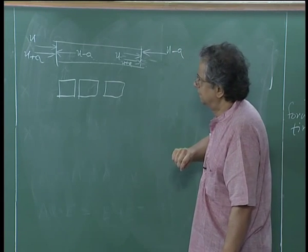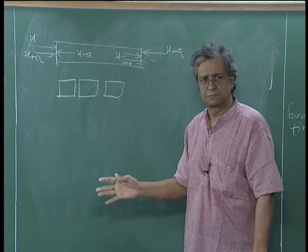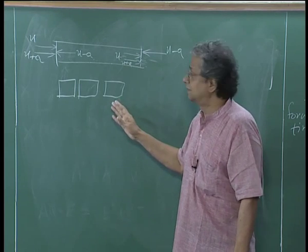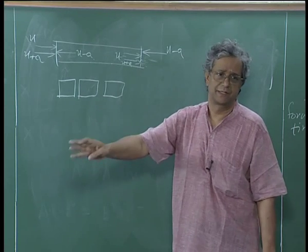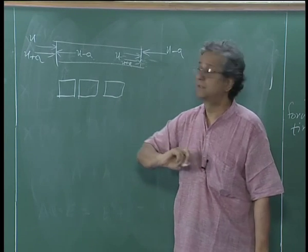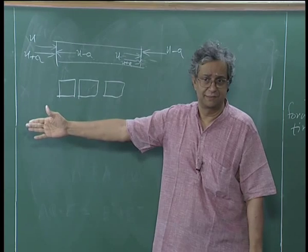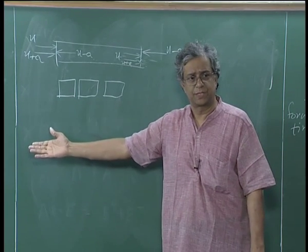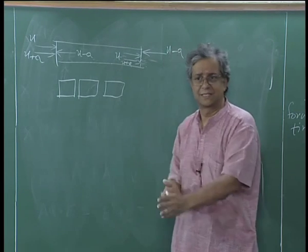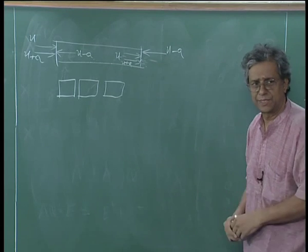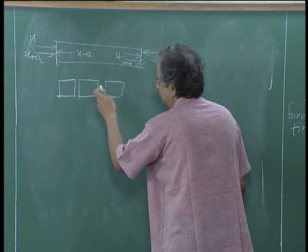I am only going to give you the motivation. I will show you that it is possible to use characteristics and reconstruct the state. There is a need to find the value of the flux at the intermediate point. There is a whole gamut of schemes for estimating the flux at that interface. I just want to present the basic ideas.